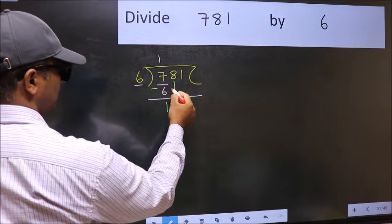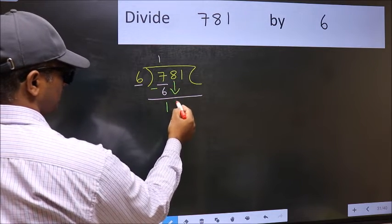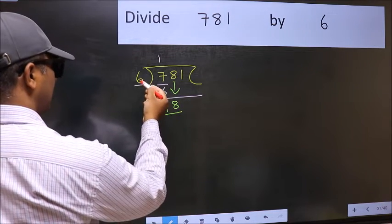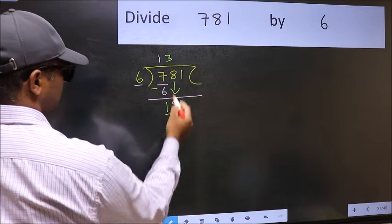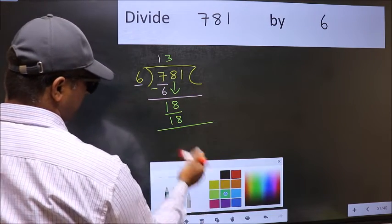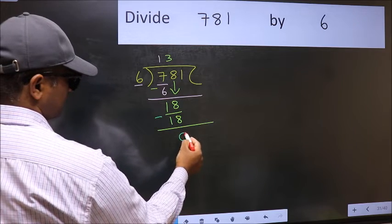After this, bring down the next number. So, 8 down. Now we have 18. When do we get 18 in the 6 table? 6 times 3 is 18. Now you should subtract: 18 minus 18 equals 0.